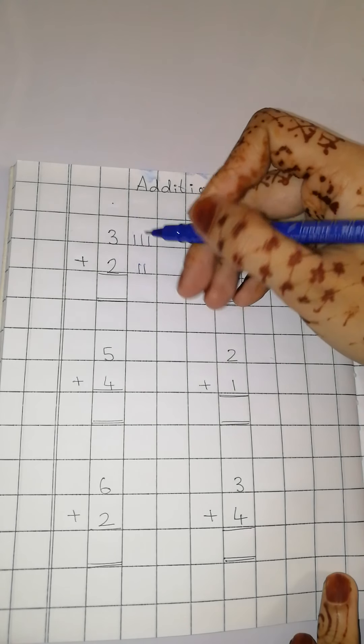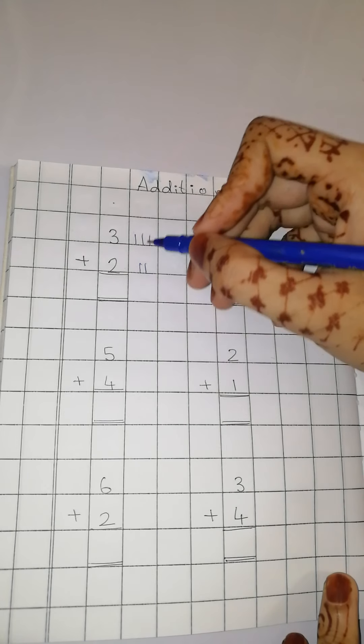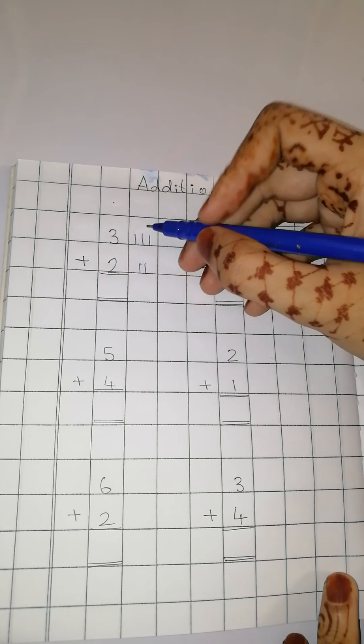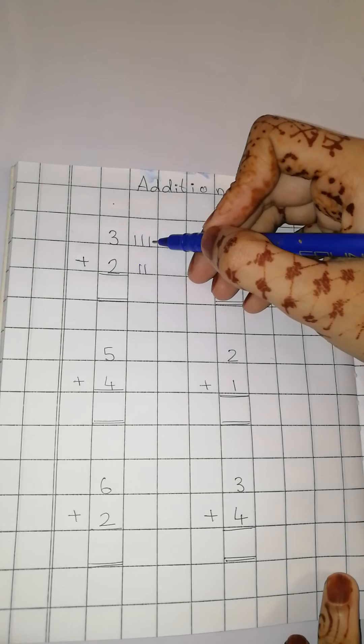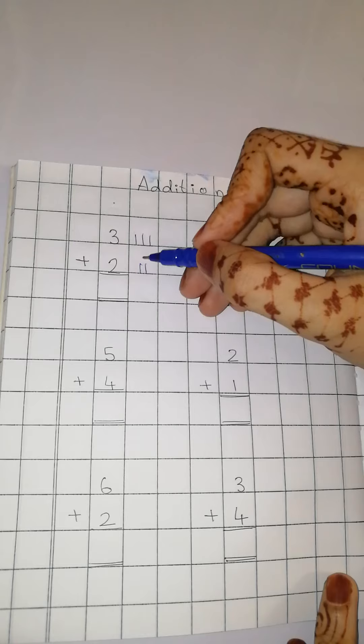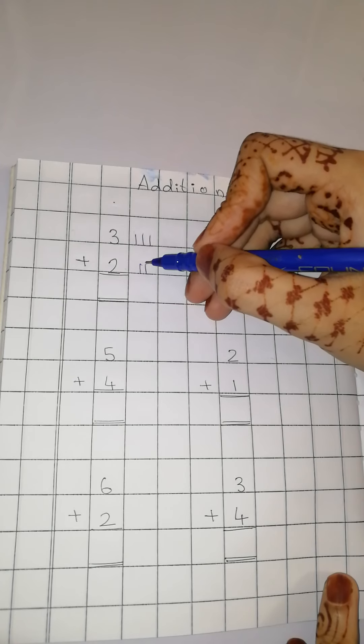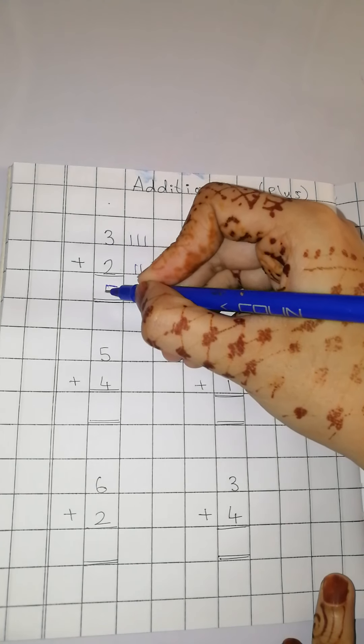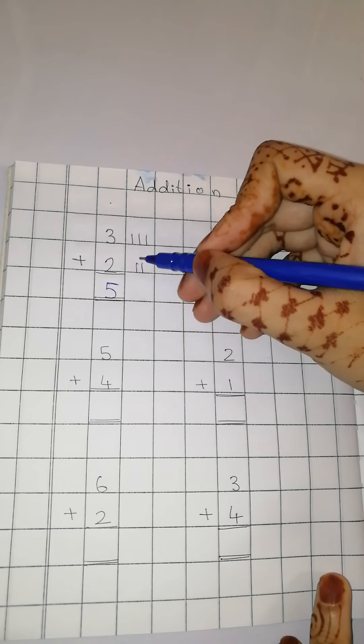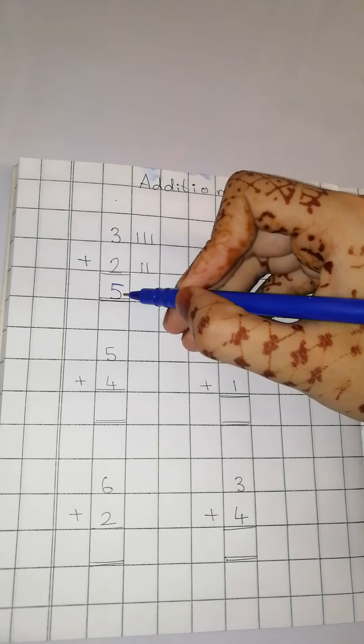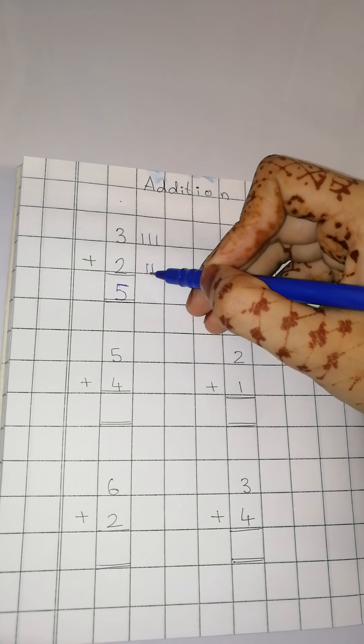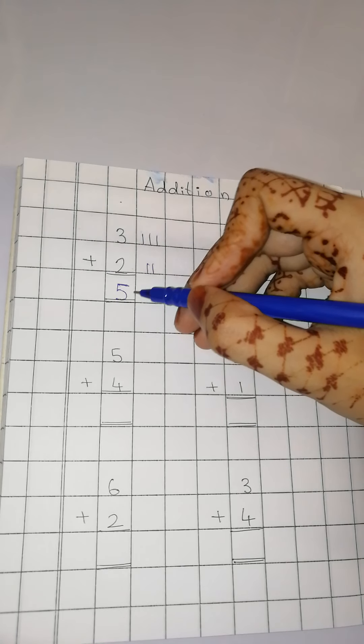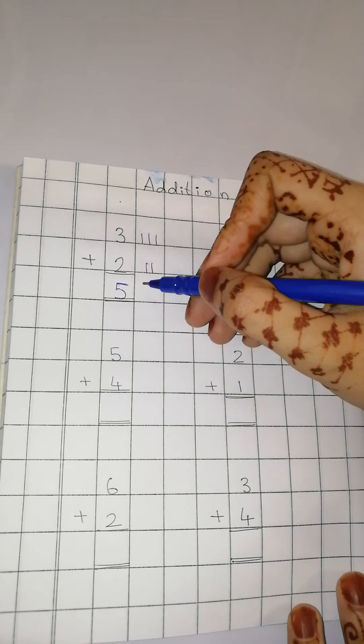Now, total kaun karegay. Total kitne huye? 3 plus 2. Let us see. Pahla number hai 3 plus 3 ke baad kya aata hai? 4 and 5. So the total is number 5. So 3 plus 2 equals to 5.